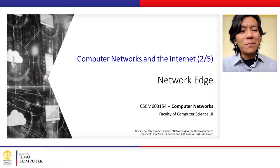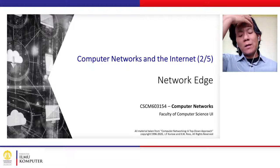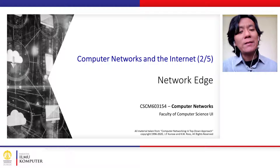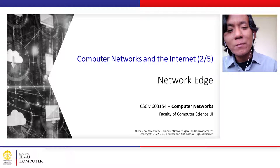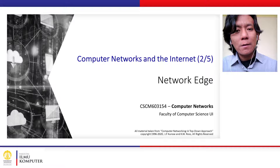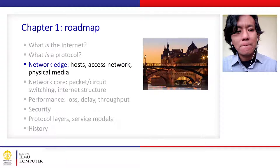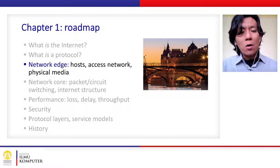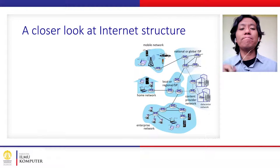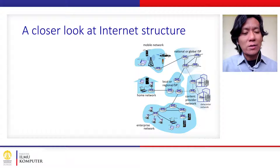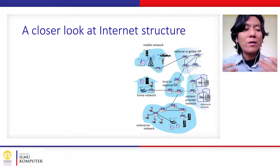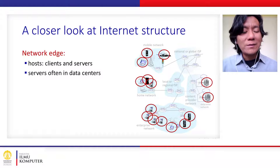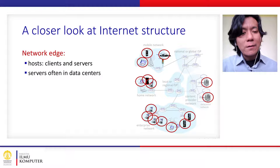Welcome to the computer network course. In this second video, we will continue our discussion on computer networks and the internet. In this particular video, we learn about network edges. The roadmap covers host access networks and physical media. If we take a closer look at the internet structure, we understand that the internet consists of a network of networks. We will first learn about the components called network edges.